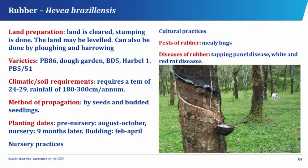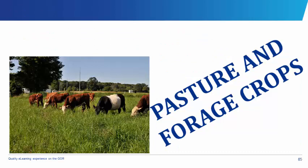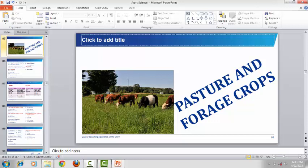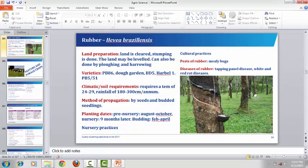We also have the groundnut, which has its botanical name as Arachis hypogaea. The groundnut is a dual-purpose crop which can be cultivated as an oil crop as well as a protein, pulse, or leguminous crop. Although it is a leguminous crop, it is mainly grown for its oil. The seed, called nut, contains about 40 to 55% oil, 30% protein, and 18% carbohydrates. The industrial products of groundnut include the groundnut cake, groundnut oil, and groundnut butter.